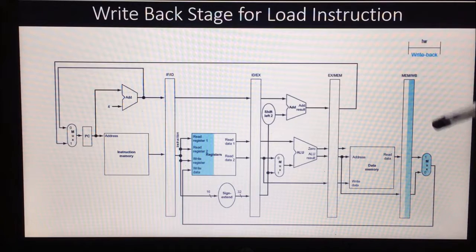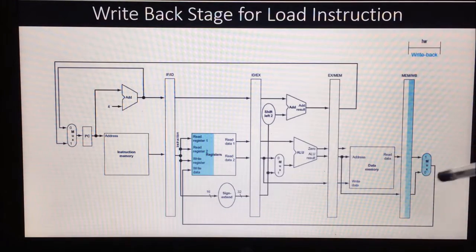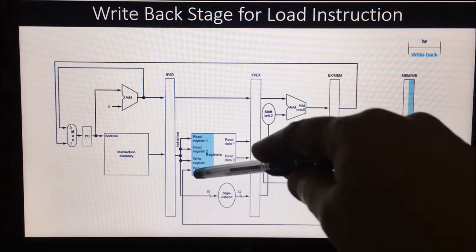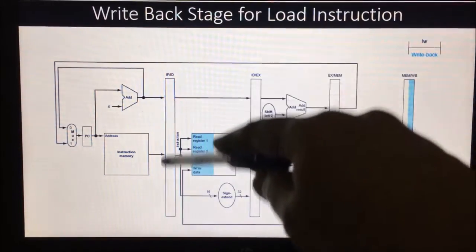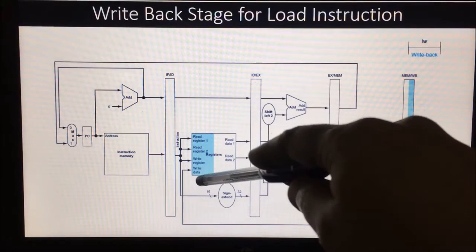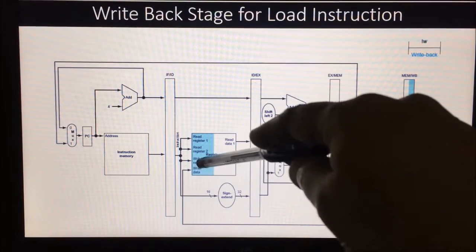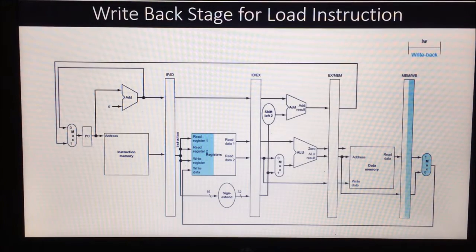The data from the MEM/WB pipeline register is written into the register file using the multiplexer output. In the write back stage, this data comes in as write data, and the write register is already selected. So from this write data, it will be written into the write register.